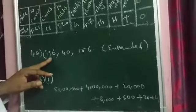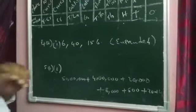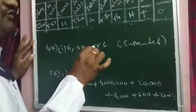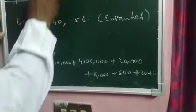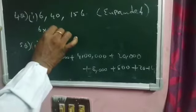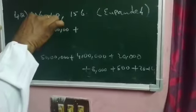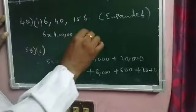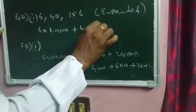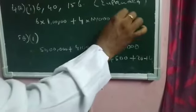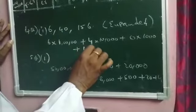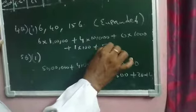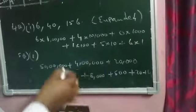Now the fourth question: a number is given and you will write it in expanded form. The number is six lakhs forty thousand one hundred fifty-six. Observe each place: lakhs place — 6 into one lakh; ten thousands place — 4 into ten thousand; thousands place — 0 into thousand; hundreds place — 1 into hundred; tens place — 5 into ten; ones place — 6 into one.